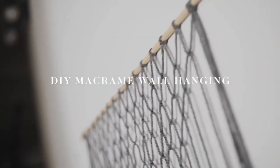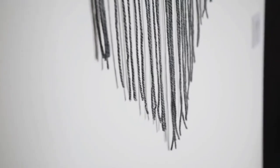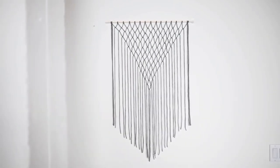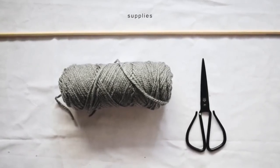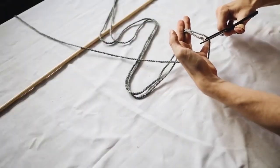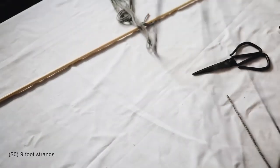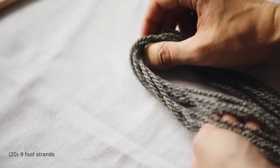Here we have another super simple macrame project. This is definitely a beginning macrame piece if you're just getting introduced to it or you want to create a super quick and easy wall hanging. The supplies that you're going to need are just some yarn, a pair of scissors, and a wooden dowel.